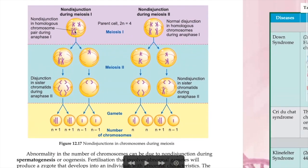Similarly, during Meiosis 2, the sister chromatids should separate — one to each side — but they don't separate. The chromatids stay together because the spindle fiber cannot pull them apart. So when anaphase occurs, one side gets both chromatids. The gamete that receives extra chromosomes will have N+1, and the gamete that loses one will have N-1. For example, if a sperm with an extra chromosome fertilizes an egg, the child will have 47 chromosomes instead of 46.